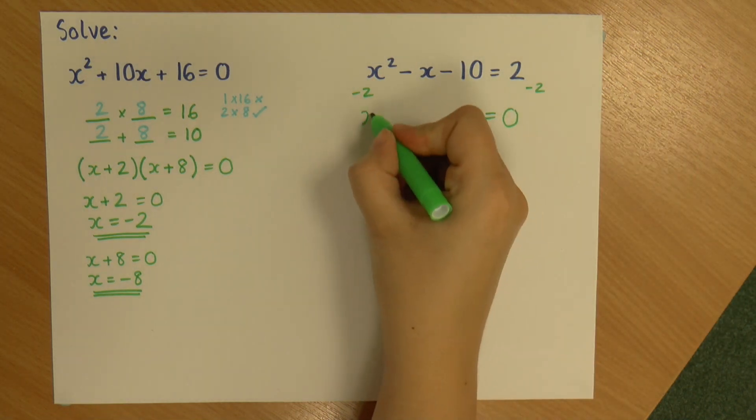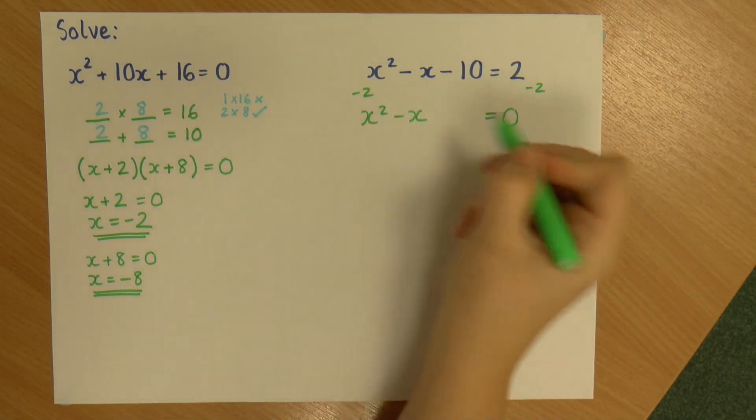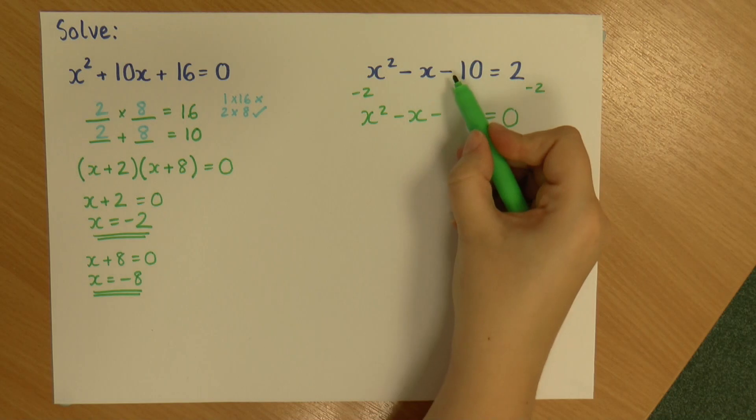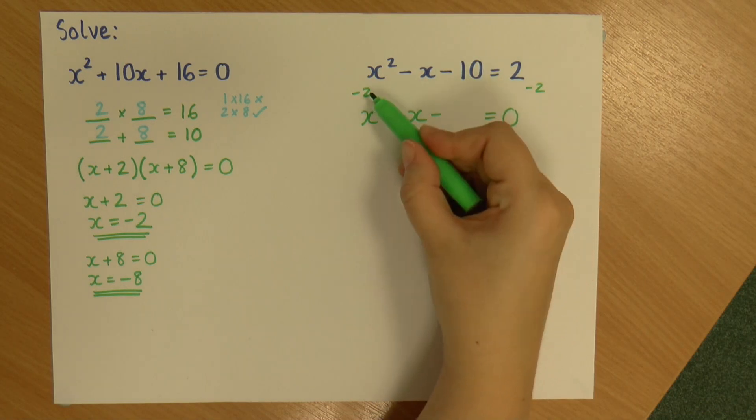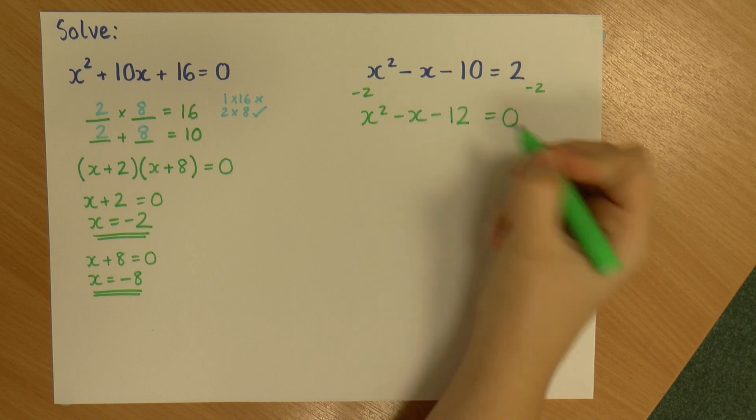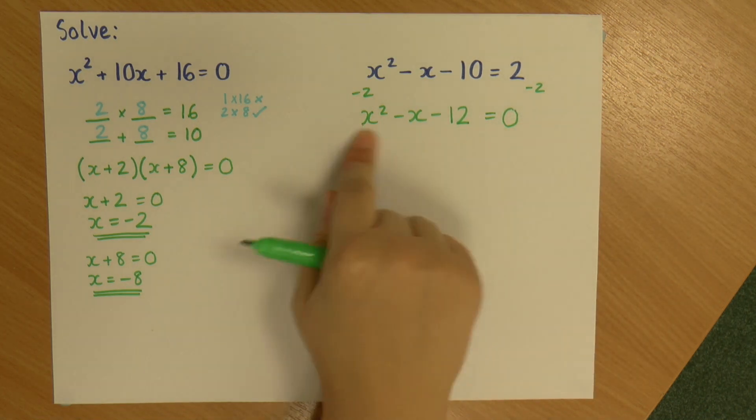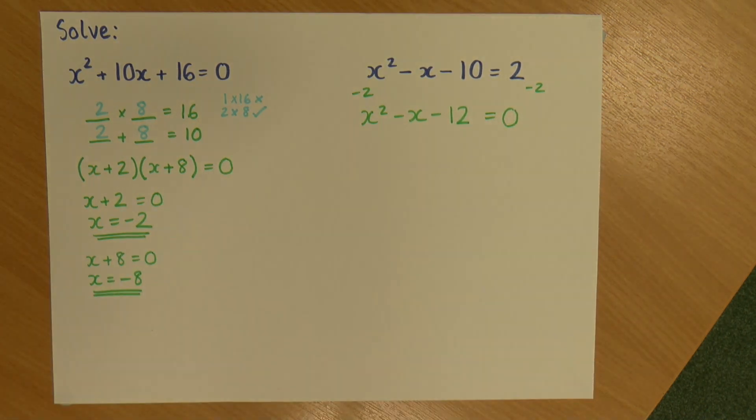Now, on the left, I've got this. And because I take away 2, I've got minus 10 minus 2, which is minus 12. So I have rearranged this equation to make it equal 0. And that's the first thing I have to check. And now I just factorise this normally.